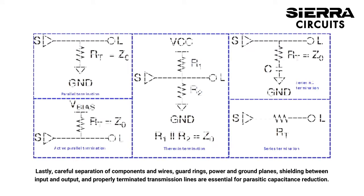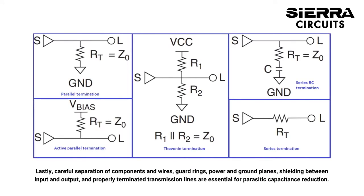Lastly, careful separation of components and wires, guard rings, power and ground planes, shielding between input and output, and properly terminated transmission lines are essential for parasitic capacitance reduction.